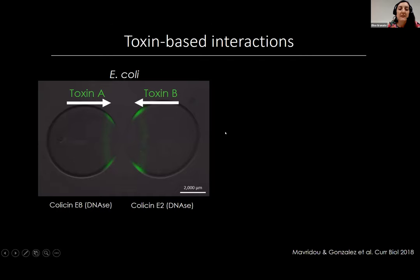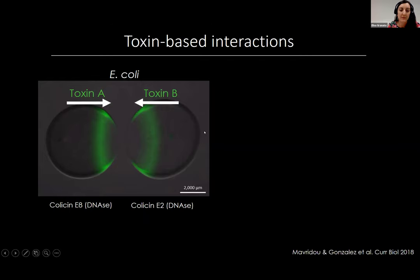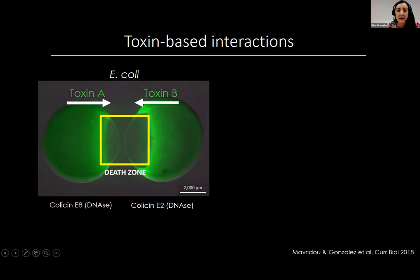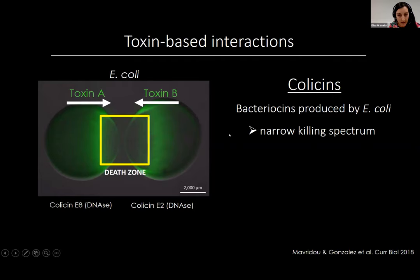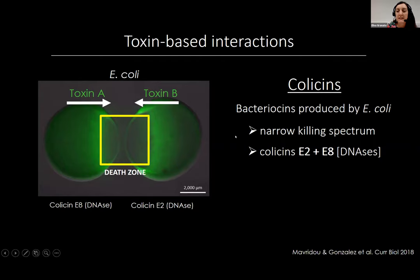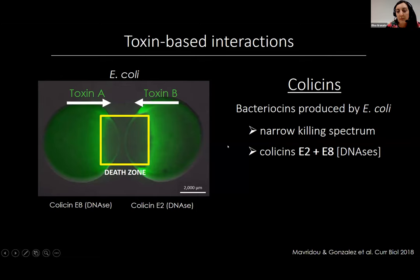Let's look at a simple example of interaction based on diffusible toxins. Here we're looking at two E. coli colonies growing side by side, each producing a different toxin, with toxin production labeled green. If we let these interact for a couple of hours, we see a death zone forming at the interface between the two colonies. These strains are producing colicins — bacteriocin toxins produced by E. coli — characterized by their extremely narrow killing spectrum, useful mainly against closely related strains. Specifically, these two strains are producing colicins E2 and E8, which are both DNases. Their mechanism of action is to enter the target cell through the membrane and non-specifically degrade that cell's DNA.